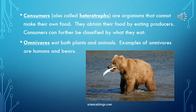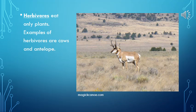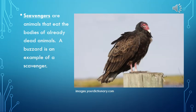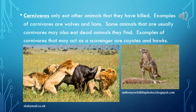Consumers, also called heterotrophs, are organisms that cannot make their own food. They obtain their food by eating producers. Consumers can further be classified by what they eat. Omnivores eat both plants and animals — examples include humans and bears. Herbivores eat only plants — examples include cows and antelope. Scavengers are animals that eat the bodies of already dead animals; a buzzard is an example. Carnivores only eat other animals that they have killed — examples are wolves and lions. Some carnivores, such as coyotes and hawks, may also eat dead animals they find.